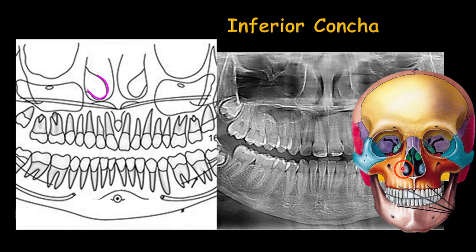The concha is covered with mucosa, and underneath the concha is a space called the inferior concha meatus. You can see this in the schematic view and in the panoramic radiograph.